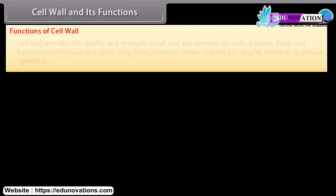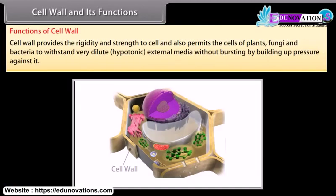The cell wall provides rigidity and strength to the cell. It also permits the cells of plants, fungi, and bacteria to withstand very dilute, hypotonic external media without bursting, by building up pressure against it.